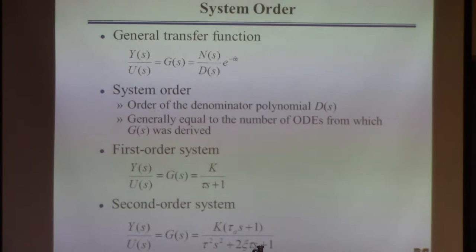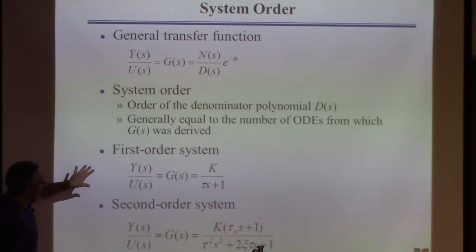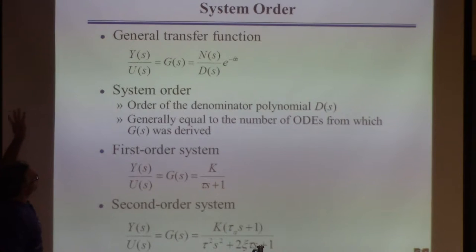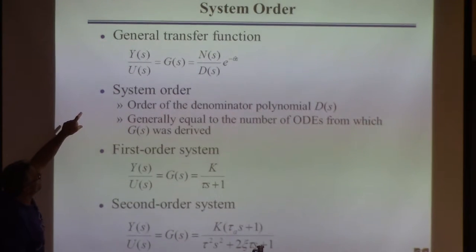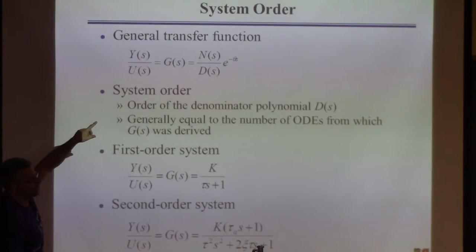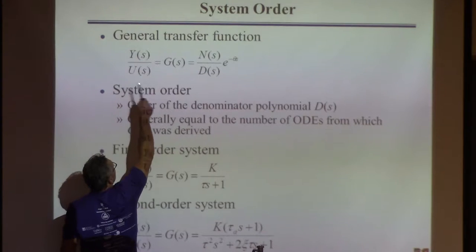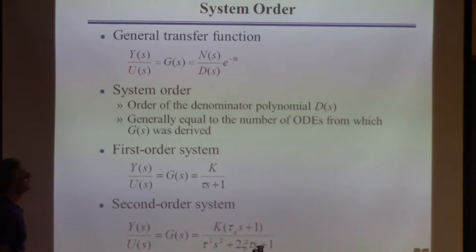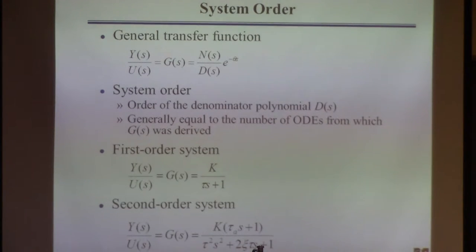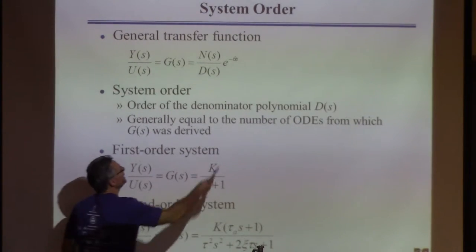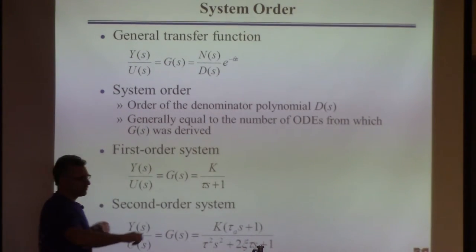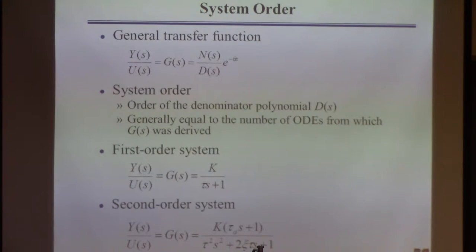Just a little nomenclature. Generically, a transfer function: we've written Y equals G times U. It's algebraic, so Y over U equals G. What I've written is the most general form of G we'd ever be interested in: some numerator polynomial over some denominator polynomial, potentially with some time delay, which is due to transportation lag down the pipe.